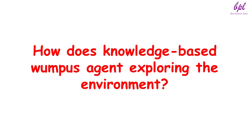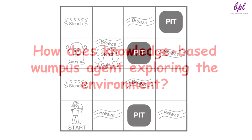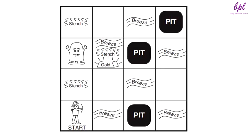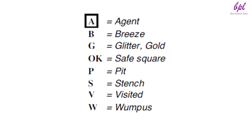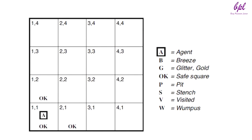Now let us see how a knowledge-based Wumpus agent explores the environment. We use an informal knowledge representation language consisting of writing down symbols in a grid: A is agent, B is breeze, G is glitter or gold, OK means safe square, P is pit, S is stench, V is visited, and W is Wumpus. The agent's initial knowledge base contains the rules of the environment. In particular, it knows that it is in square 1,1 and that 1,1 is a safe square, denoted with A and OK respectively.